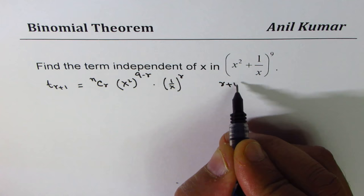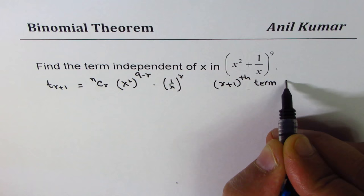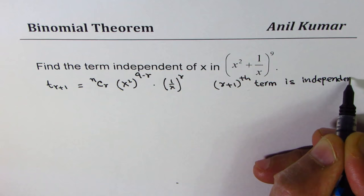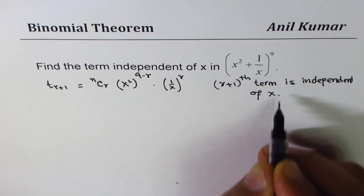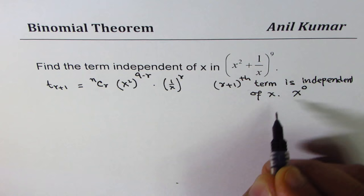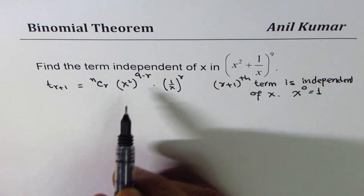So, we are assuming that r plus 1th term is independent of x. When we say independent of x, we are trying to say that the exponent will be 0. Anything to the power of 0 is 1. That's the whole idea.